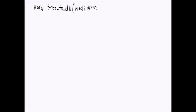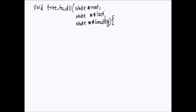We write a function tree2dll which takes three parameters: the root node, a pointer-to-pointer of last node (node** last), and a pointer-to-pointer of the head reference (node** headref). We use pointer-to-pointer for last because at every recursion invocation we update the last node, and that update must be reflected in the calling function. The headref is also pointer-to-pointer because it is modified once — when we first encounter the head node — and must be written back to the original calling function.